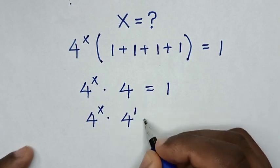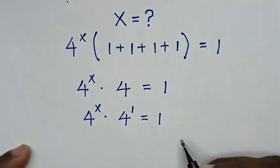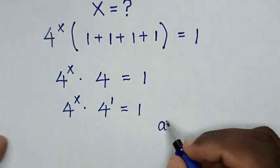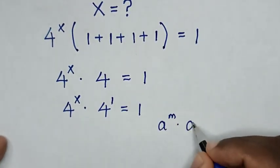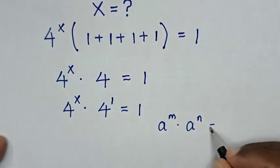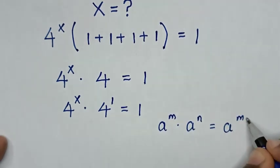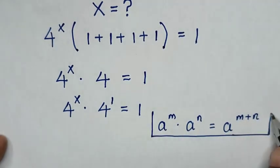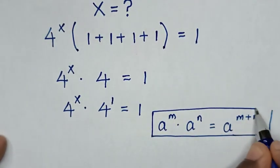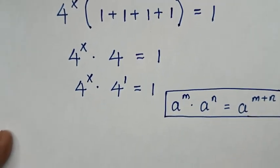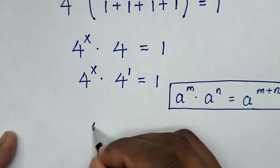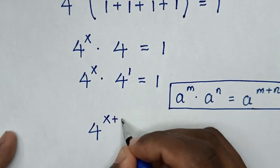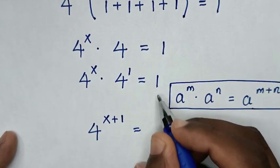This is the same as 4 power 1, is equal to 1. Now from this multiplication of exponents, we apply the rule: a power m times a power n is equal to a power m plus n. So the base of 4 is common, and it will be 4 power x plus 1 is equal to 1.